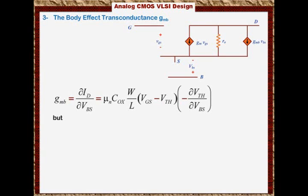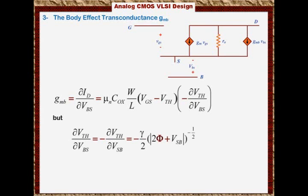But we also know ∂Vth/∂Vbs equals -∂Vth/∂Vsb. So we flip the order of Vsb by flipping the sign, and then we say that this equals -γ/2 × |2Φ + Vsb|^(-1/2). Basically what we did is we took the derivative of the threshold voltage equation.